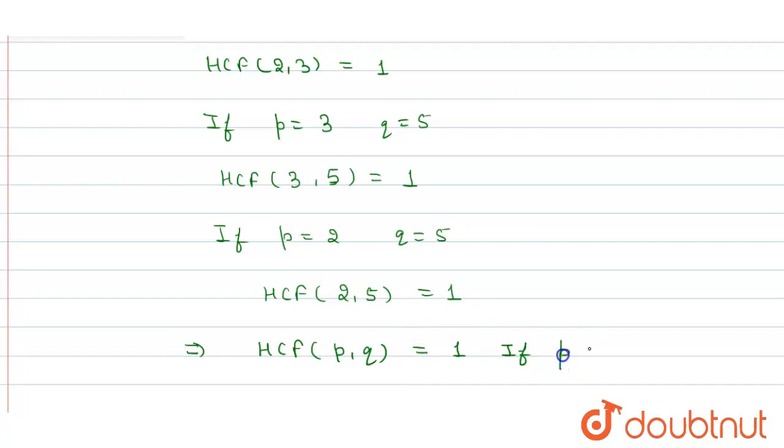If P and Q are prime numbers, the HCF should always equal 1.